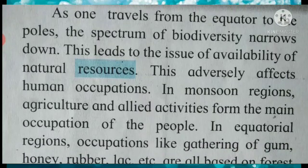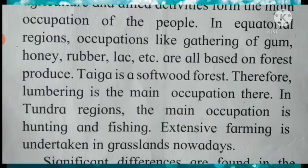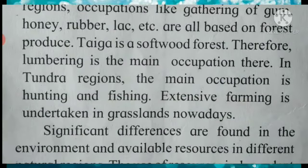As one travels from the equator to the poles, the spectrum of biodiversity narrows down. This leads to the issue of availability of natural resources, which adversely affects human occupation. In monsoon regions, agriculture and allied activities form the main occupation of the people. In equatorial regions, occupations like gathering of gum, honey, rubber, lac, etc. are all based on forest produce.